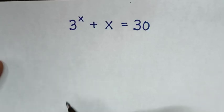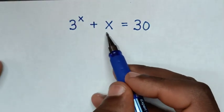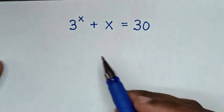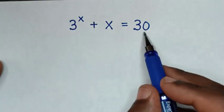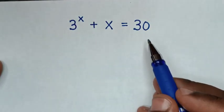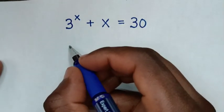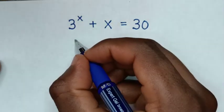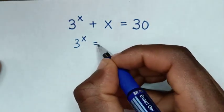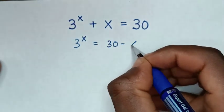Hello. How to solve 3 to the power of x plus x is equal to 30, to find the value of x from this equation. So first we take x to the right side, so it will be 3 power of x is equal to 30 minus x.